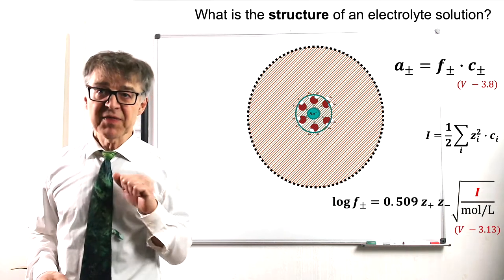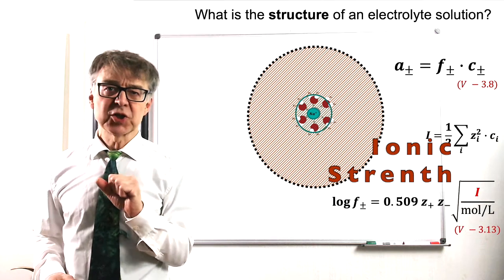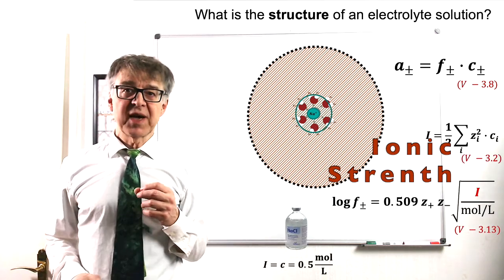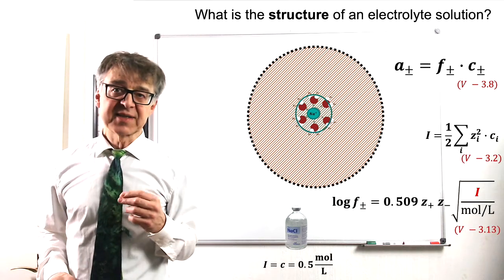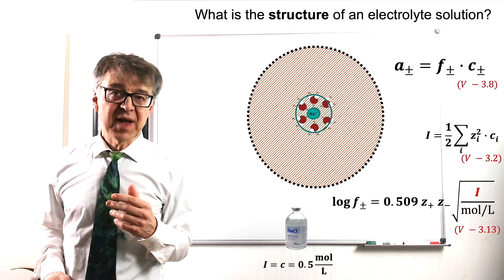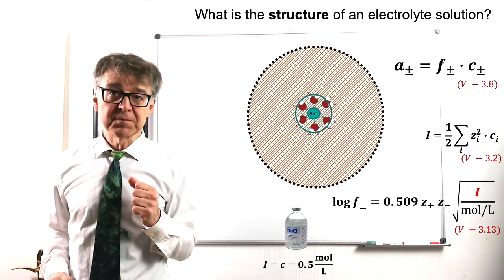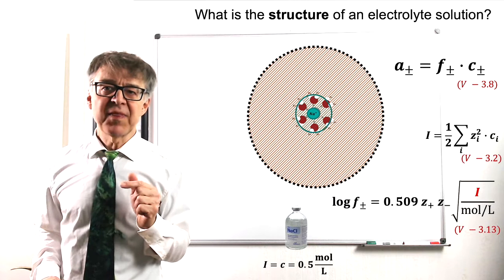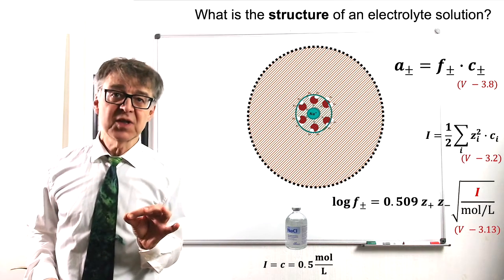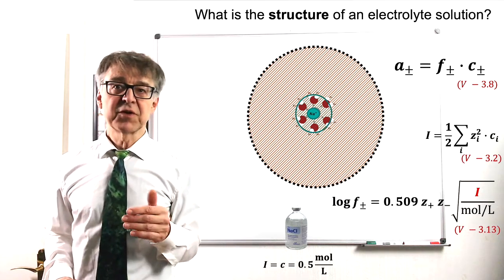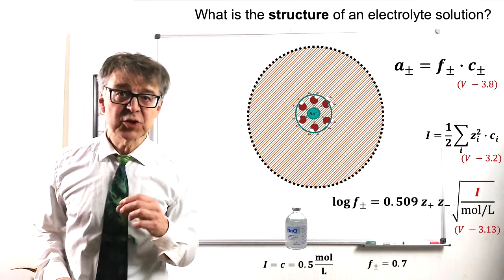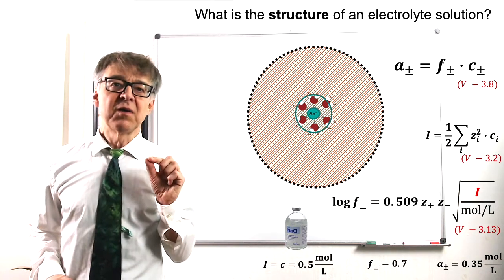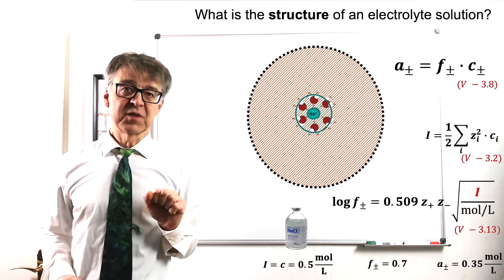I being the ionic strength, a kind of adjusted measure of electrolyte concentration. For a 1 to 1 electrolyte, like sodium chloride, where each ion is singly charged, the ionic strength is equal to the concentration. Using these equations, it turns out that a 0.5 molar saline solution has got an activity coefficient of 0.7, thus showing only an activity, an effective concentration, of 0.35 moles per liter.